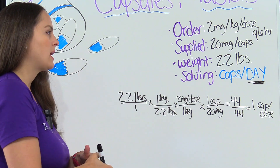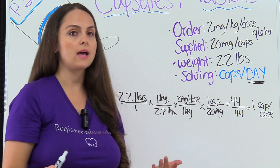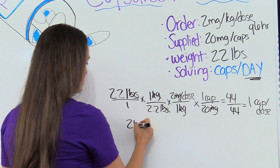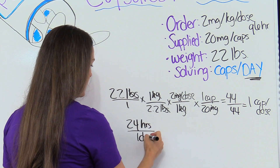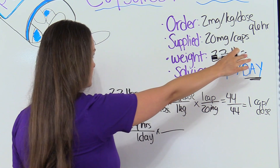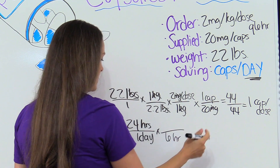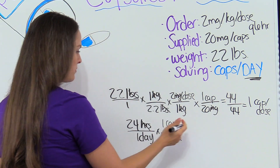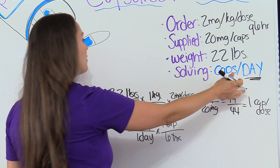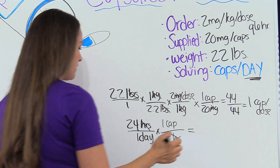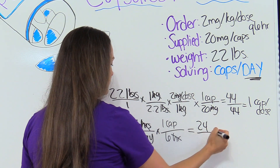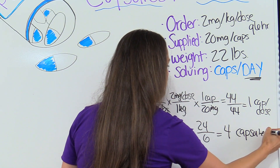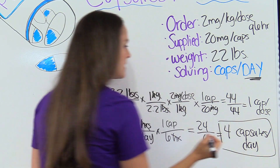Now we need to figure out how many capsules they can have for the whole day, because this patient can have this every six hours. We know 24 hours equals one day, and this patient can have the medication every six hours — and every six hours they get one capsule. Hours cancel out, leaving capsules per day. Multiply everything at the top: 24; everything at the bottom: 6. Divide that out and you get 4. So they can have four capsules per day — that is our answer.